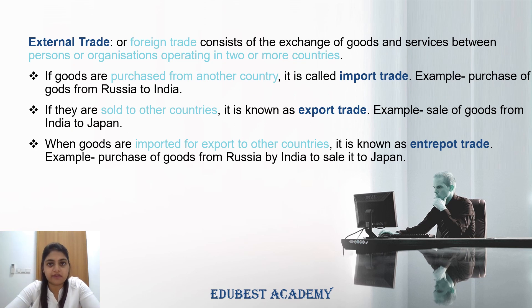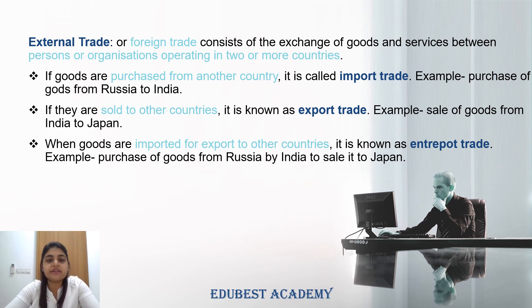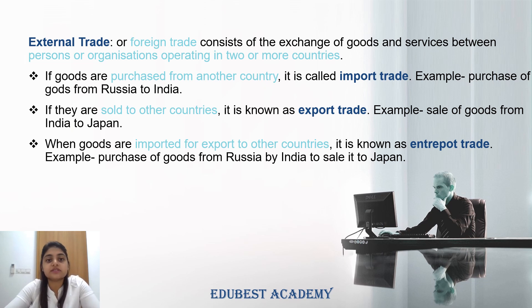The second type of trade is external trade, also known as foreign trade. External trade is that which happens between any two persons or organizations belonging to different countries or different regions. Basically, the exchange of goods and services between a person from one country and a person living in another country is called external trade. External trade is of three types: import trade, export trade, and entrepot trade.